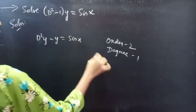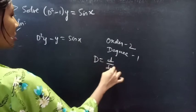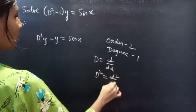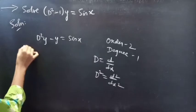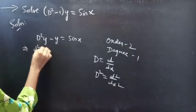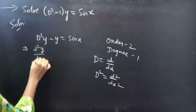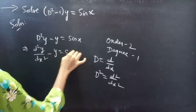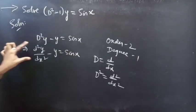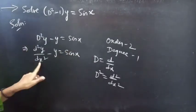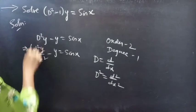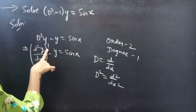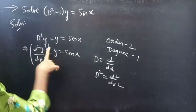We know that the differential operator D equals d/dx, and D² equals d²/dx². So we can write the equation as d²y/dx² - y = sin x. Identifying the highest derivative here, d²y/dx² is the highest derivative, so our order is 2 and the degree is 1.